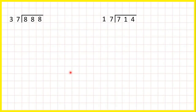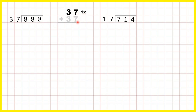Now we've got some long division questions. We have 888 divided by 37, so we're going to need to work out our 37 times table. 37 is 1 times 37, then if we add another 37 we get...